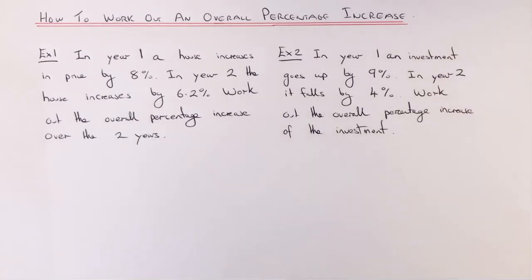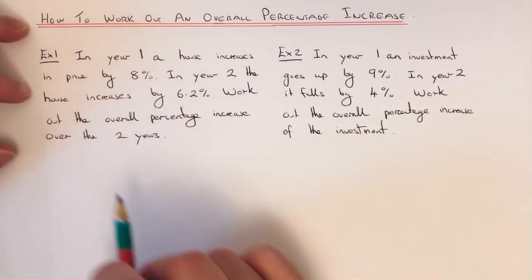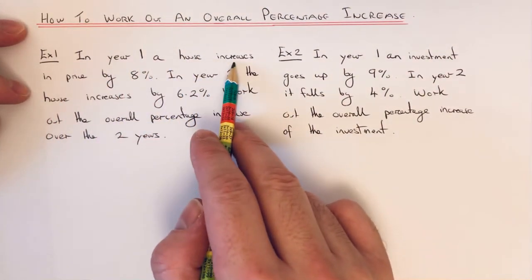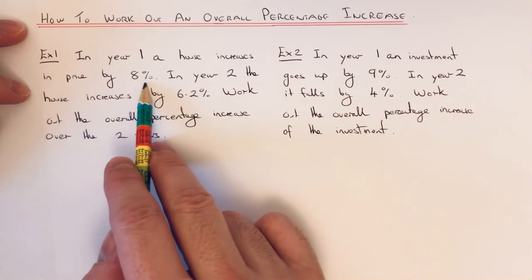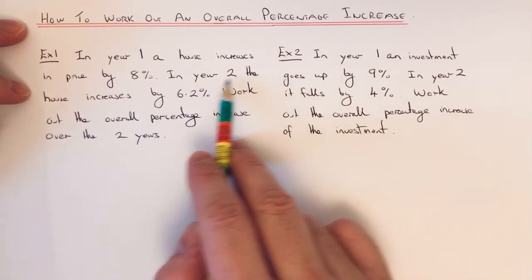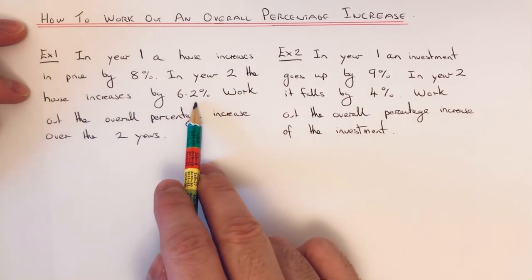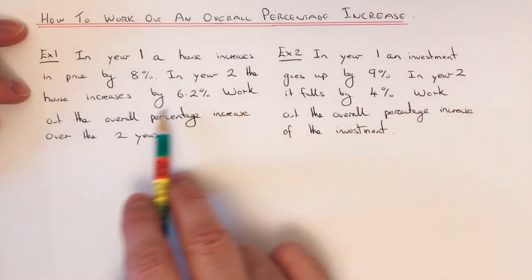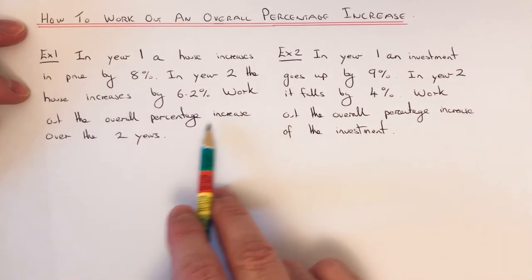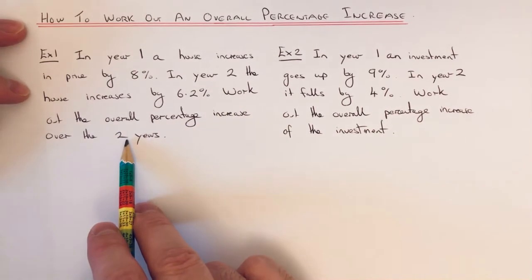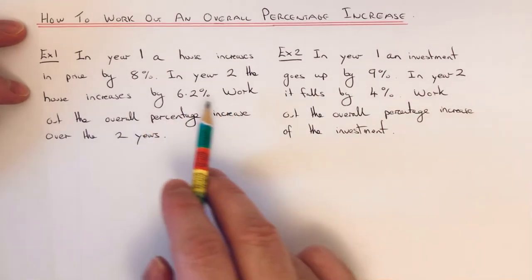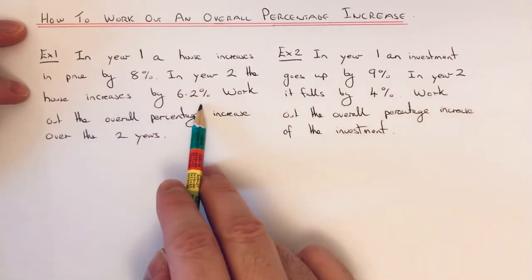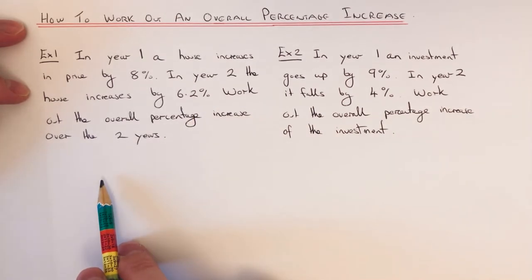Let's have a look at Example 1. In year 1, a house price increases by 8%, and in year 2 the house increases by 6.2%. Work out the overall percentage increase over the two years. Now it's not as simple as just adding these two together. It's a lot harder than that.